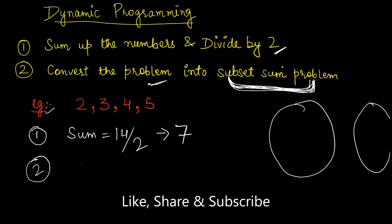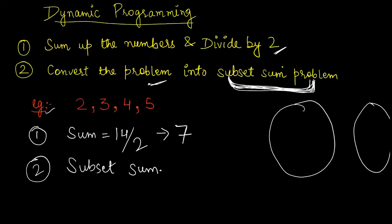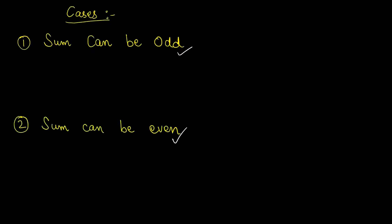So the cases arise over here are whether sum can be odd or even. The sum which we have taken, 14, can be even, can be even or can be odd, depends on the number. So as we are dividing the numbers into two subsets, the number should be even.